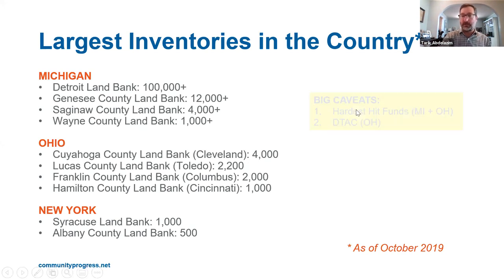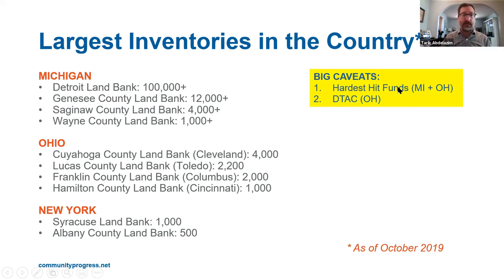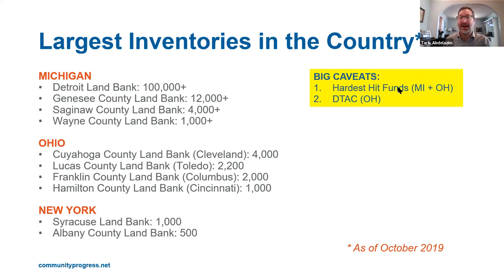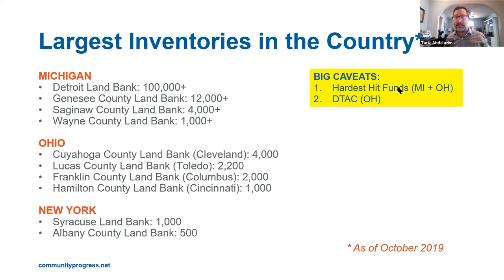One of the reasons you see such large numbers in Michigan and Ohio is that they had access to Hardest Hit Funds, which was part of the American Recovery and Reinvestment Act following the Great Recession. The funds were primarily to help homeowners stay in their homes and refinance their mortgages, but demolition was also made an eligible activity. Michigan, Ohio, and others carried out very large-scale demolition campaigns, dealing with a longstanding inventory they never thought they'd be able to address for decades. That's why you see some of these large numbers — they pulled those properties into their inventory after demolition.